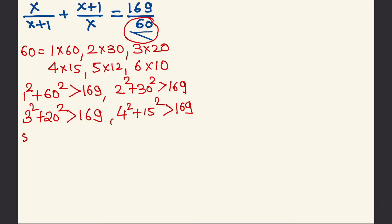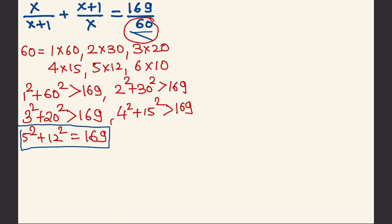Now, 5²+12² comes out to be 169. So the factors of 60 that work are 5 and 12, and we get the reciprocal fractions as 5/12 and 12/5.